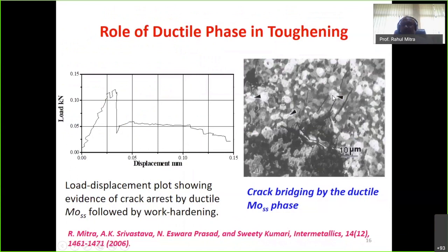A typical microstructure from such ternary alloys shows cracks arrested by molybdenum solid solution particles, which blunt or bridge the cracks because this phase is ductile. In the load-displacement curve for fracture toughness testing, there is non-linearity and the load drop is arrested by the ductile molybdenum phase; it then undergoes work hardening, causing an increase in load after the initial drop, followed by a stable deformation regime. This is characteristic of brittle matrices reinforced with ductile phases.